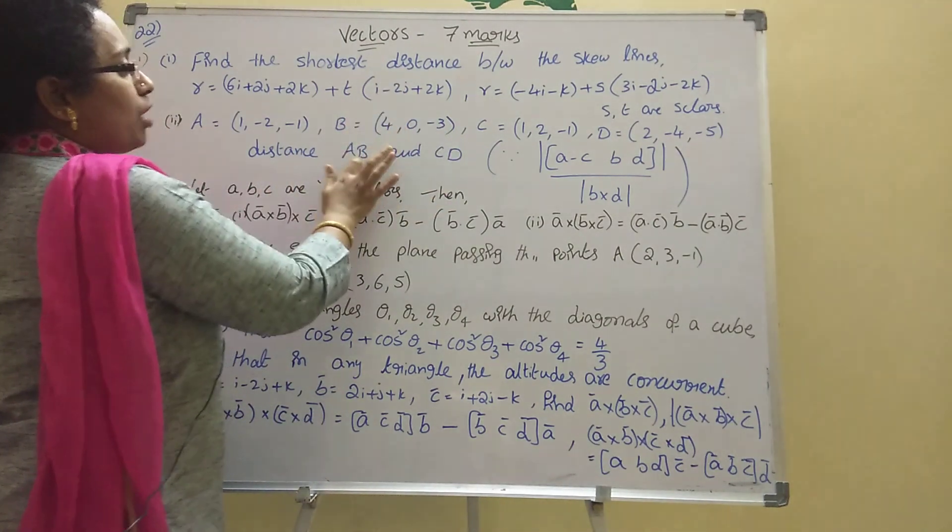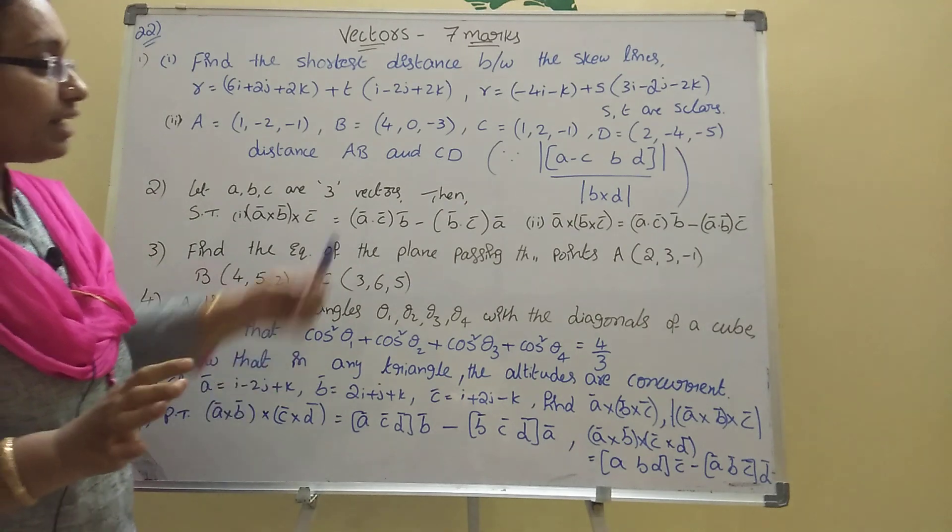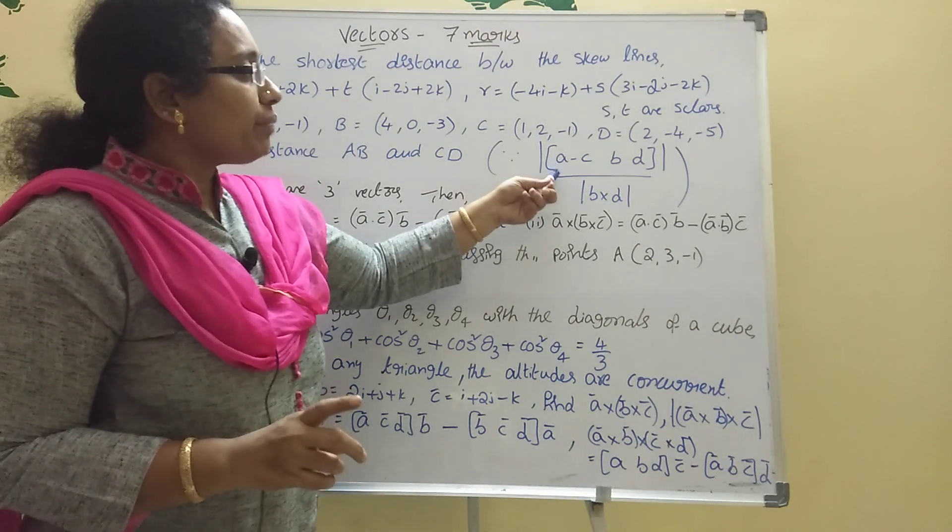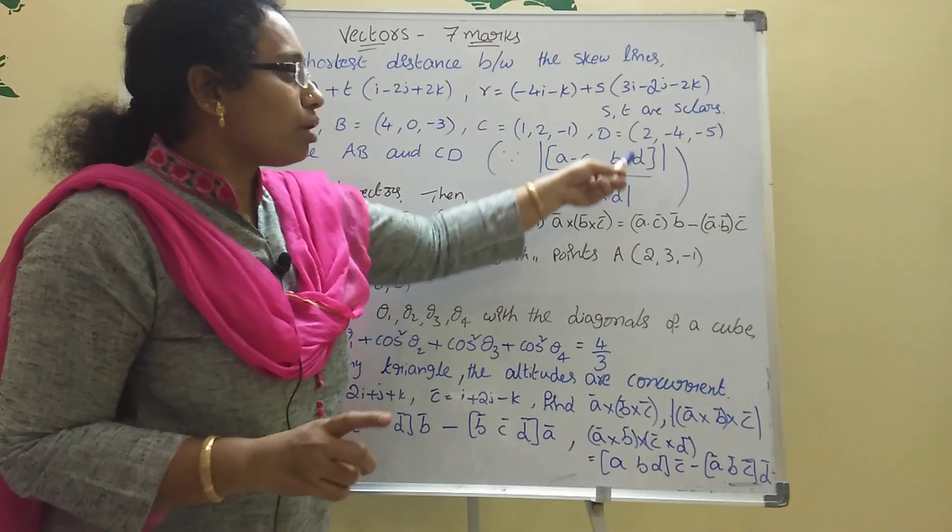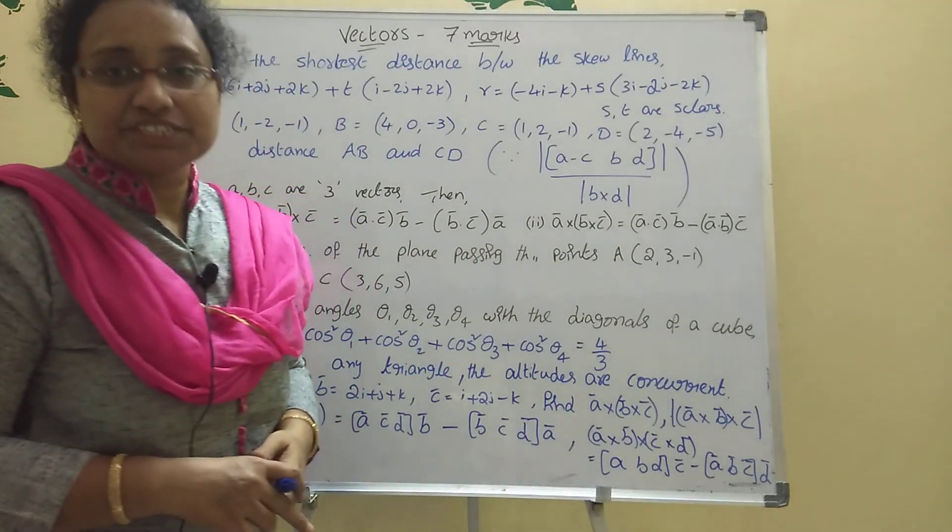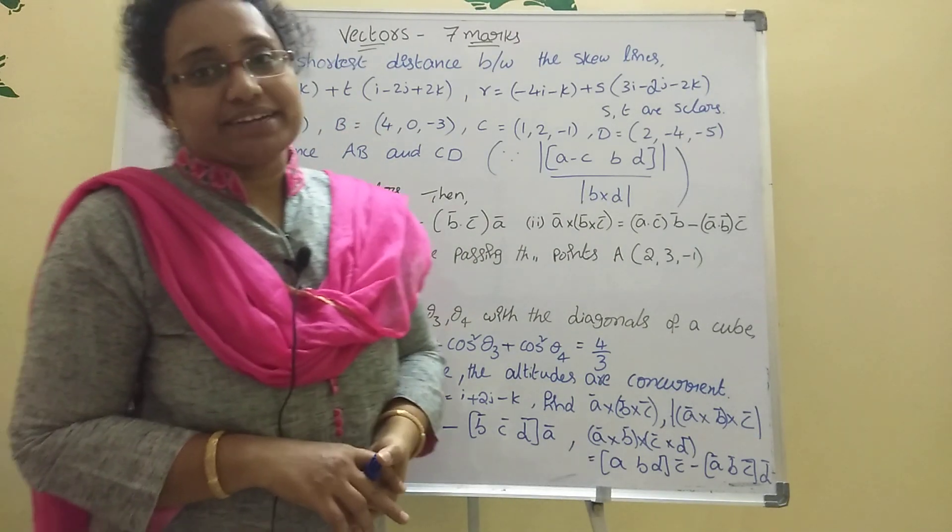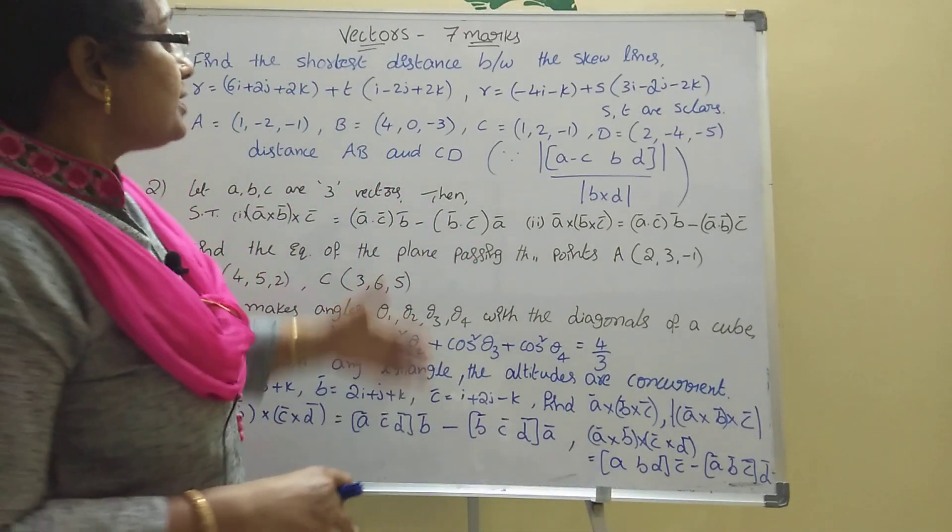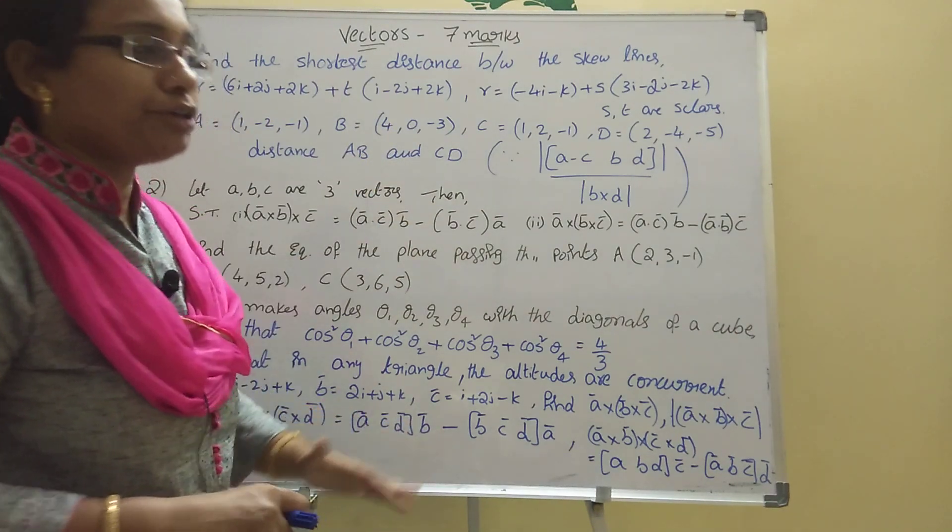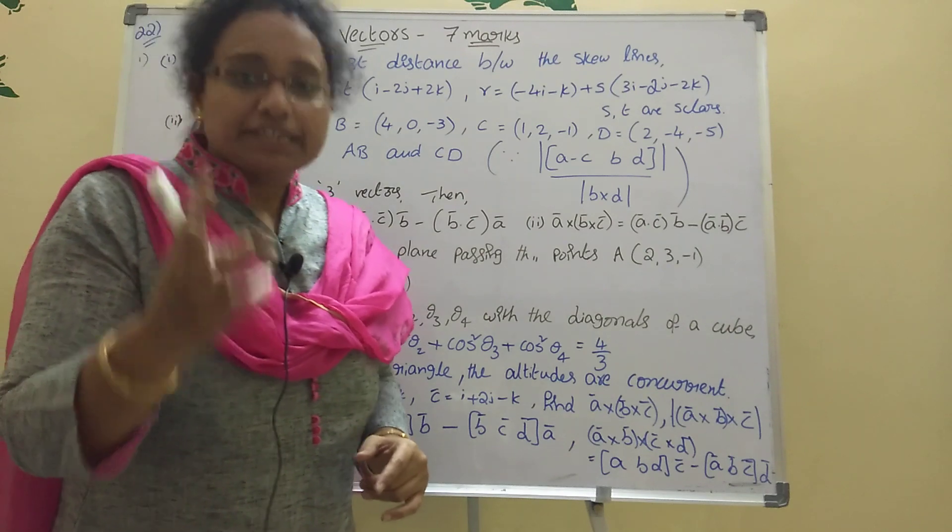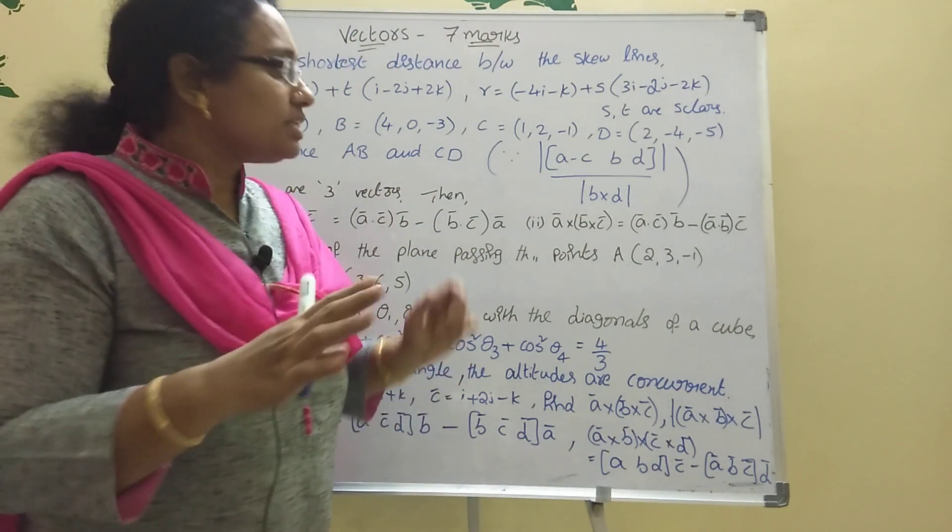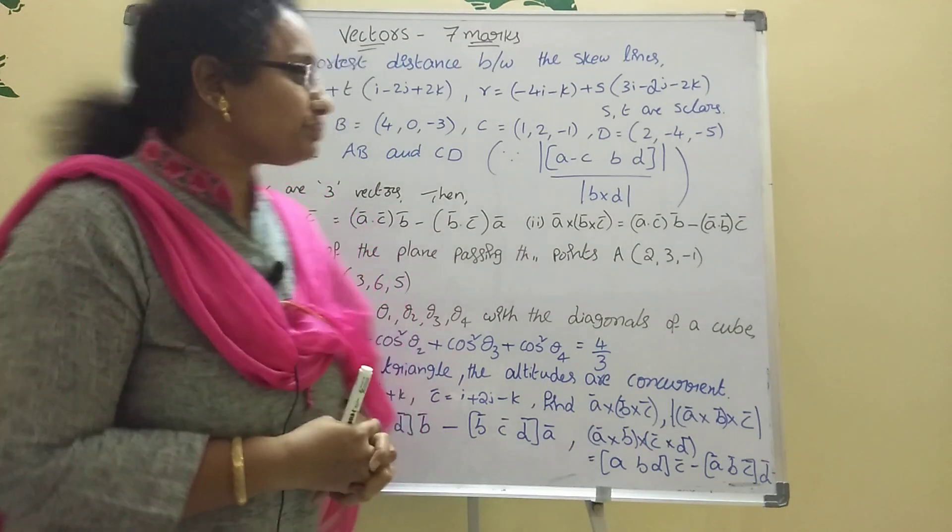Here two formulas. I wrote one formula here: (a - c) · (b × d) / |b × d|. That is the shortest distance of the skew lines. This is a very important problem. Maximum it will come in this model. This is very important. You should concentrate only two or three hours on vectors. The 7-mark question will easily be understood.